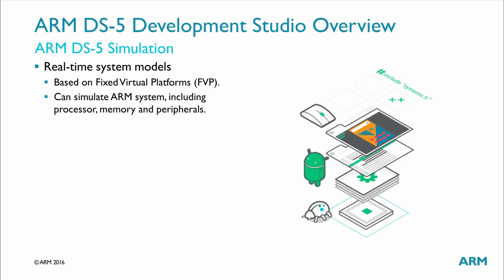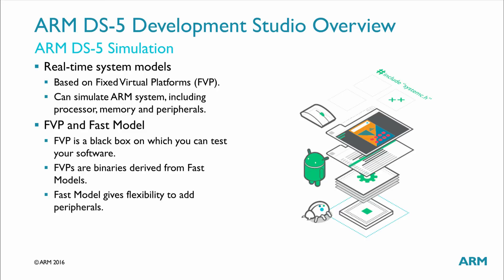Simulation is based on Fixed Virtual Platforms, or FVPs, which are software models of processors and devices that are set out in a programmer's view, or PV. PVs provide a comprehensive model on which to test and build the software. The functional behaviour of a model is equivalent to real hardware. However, PV models sacrifice absolute timing accuracy to achieve fast simulated execution speed, so cycle counts are not reliable. FVPs are non-customisable PV models suitable for software development, which Arm supplies as executable files. FVPs are fixed — they are a black box on which software can be tested.